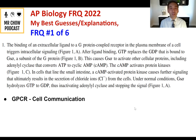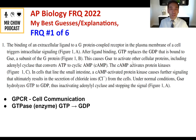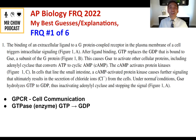After ligand binding, GTP replaces the GDP bound to the subunit of the G-protein. This causes the GTPase GS-alpha to activate other cellular proteins, including adenyl cyclase, which converts ATP to cyclic AMP — a secondary messenger. The cAMP activates protein kinases in cells lining the small intestine. This cAMP-activated protein kinase causes further signaling that ultimately results in the secretion of chloride ions from the cells. Under normal conditions, GS-alpha hydrolyzes GTP to GDP, inactivating adenyl cyclase and stopping the signal.